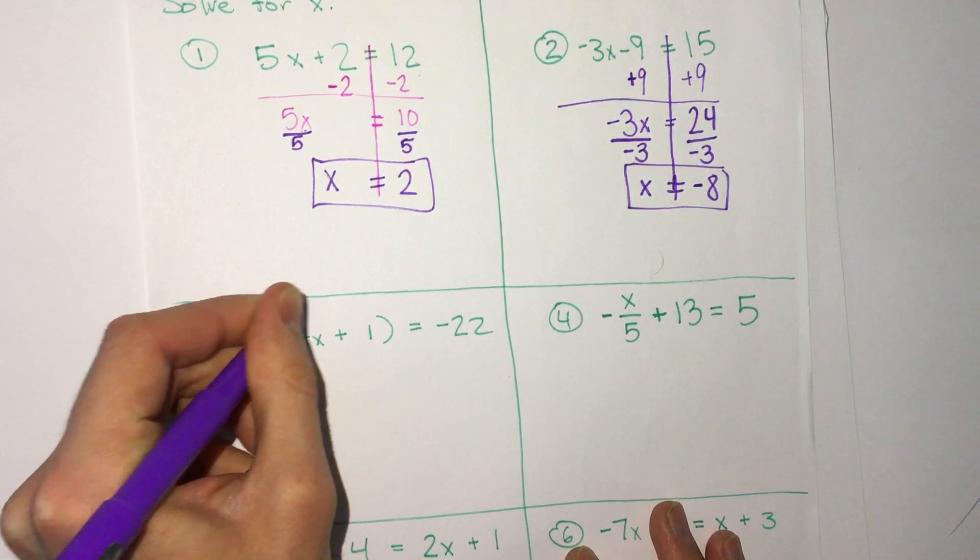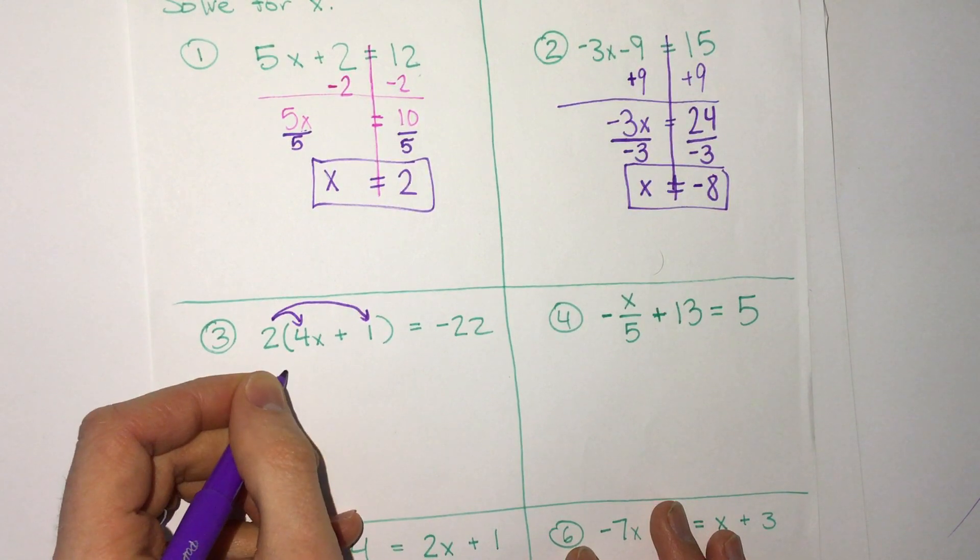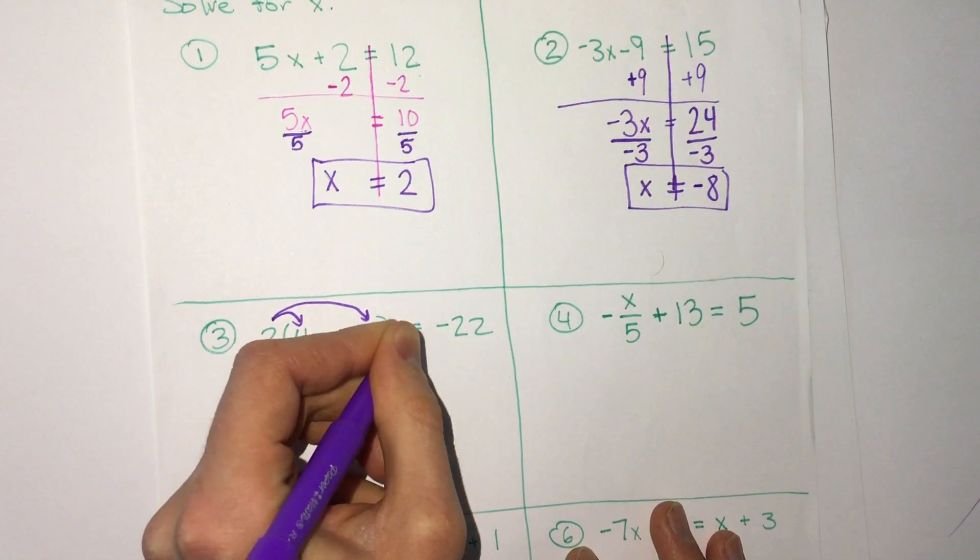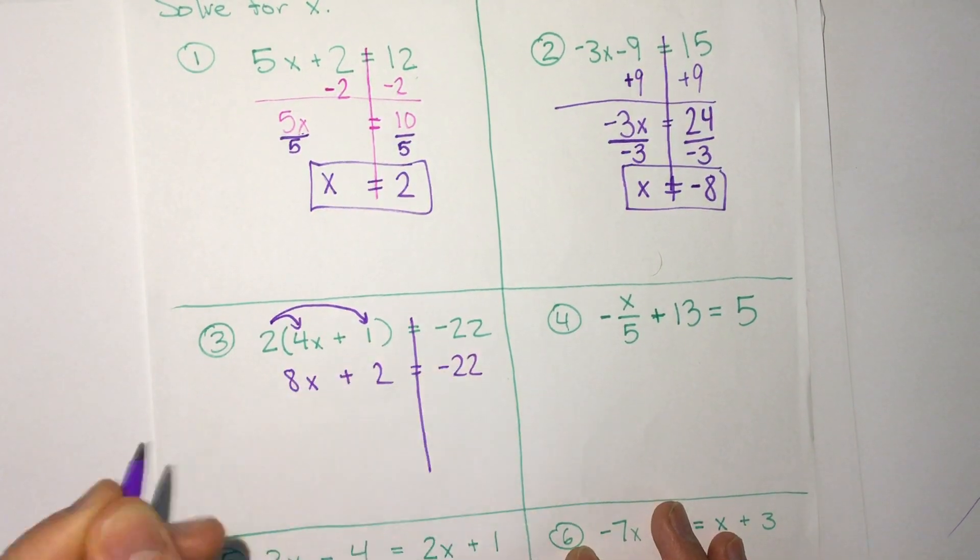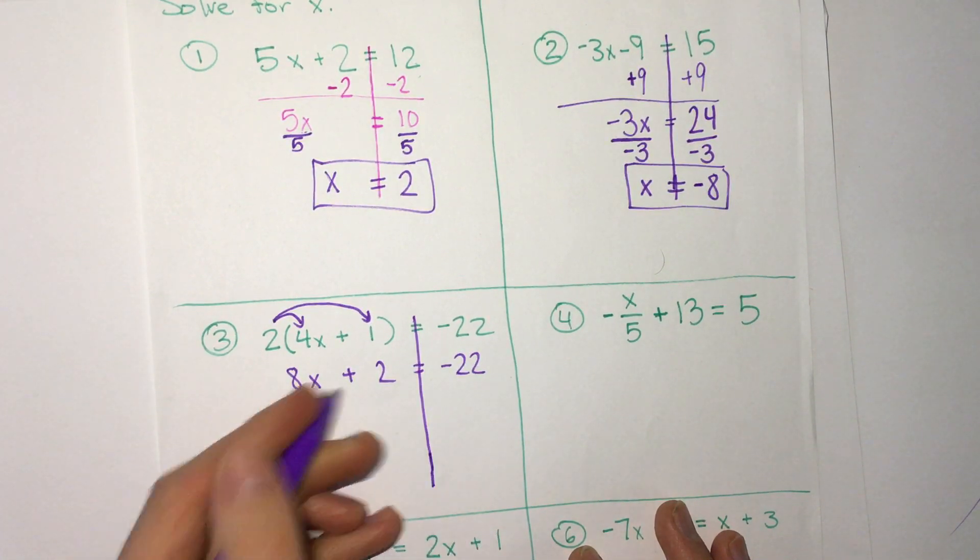So we're going to simplify 2 times 4x plus 1 by putting the 2 into both things. So we get 8x plus 2, and we'll still just make our little equation bar there even though we haven't moved anything yet. And that still equals negative 22. Now we have an equation just like before.